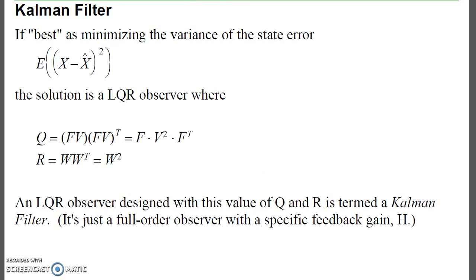A Kalman filter is simply an observer where I use a very specific Q and R in designing the observer gains. What the Kalman filter is, is the best observer. Best meaning I minimize the variance between the plant states and the observer states, or the expected error between the square of the two.